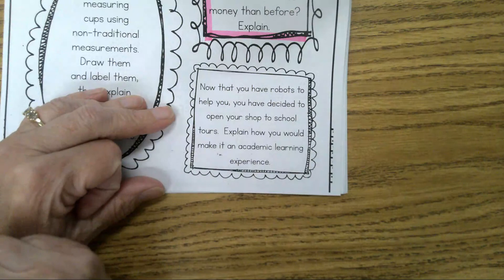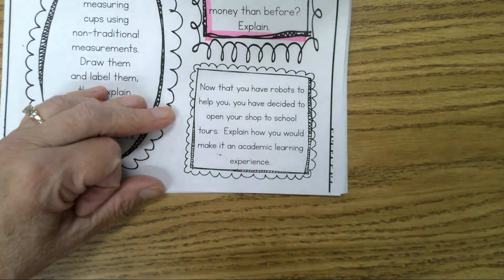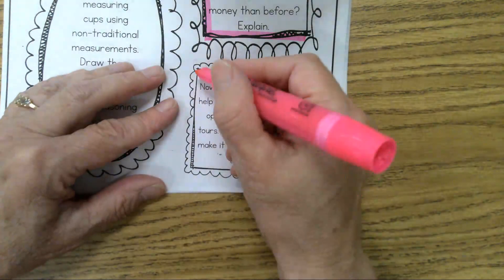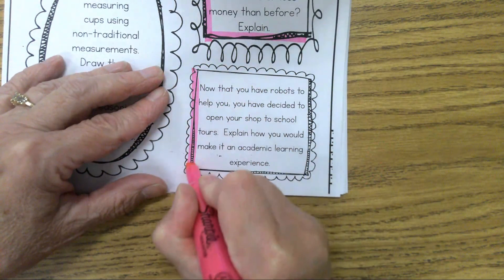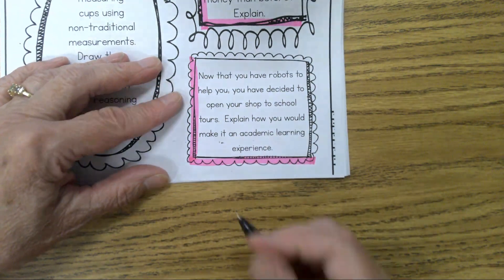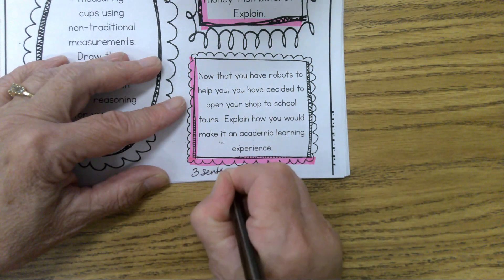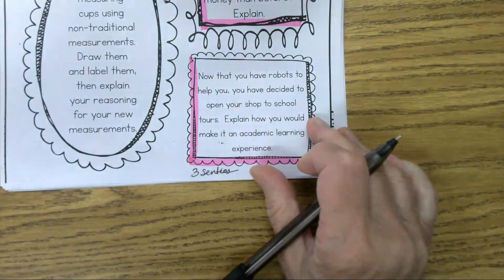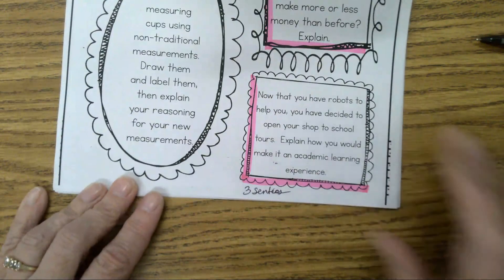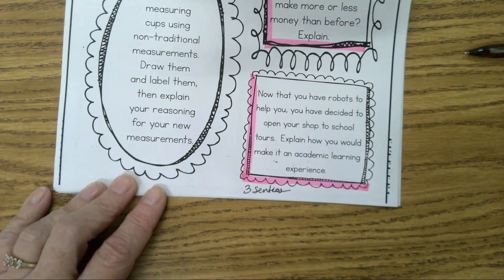And then the other one that I think a lot of kids will end up doing is this last one. Now that you have robots to help you, you have decided to open your shop to school tours. Explain how you would make it an academic learning experience. Now it doesn't have to only be about math, but on this one you would need to write three sentences, and you would get your full credit. That is what you will need to do. We'll have time to do that in class tomorrow and that will be it for your sixth grade math curriculum year. And I think it's time to go. Have a great day.